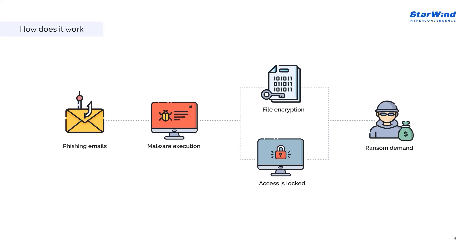Another popular infection vector takes advantage of services such as Remote Desktop Protocol (RDP). With RDP, an attacker who has stolen or guessed an employee's login credentials can use them to authorize and remotely access a computer within the enterprise network. With that access, the attacker can directly download the malware and execute it on a machine under their control. Others may attempt to infect systems directly — for example, WannaCry exploited the EternalBlue vulnerability. Most ransomware variants have multiple infection vectors.